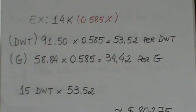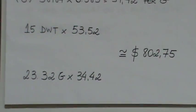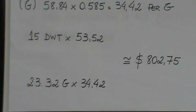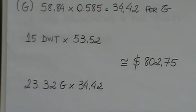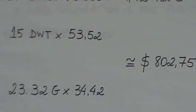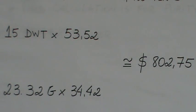Let's say we have an item that's about 15 pennyweights today at today's price of $1,830. We know each pennyweight is $53.52. So 15 times 53.52 is approximately $802.75. Now 15 pennyweights is approximately 23.32 grams. We're going to times that by the per gram price of 14 karat today, which is $34.42. And again, you get approximately $802.75.